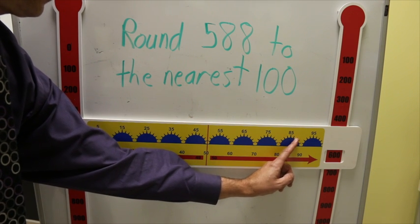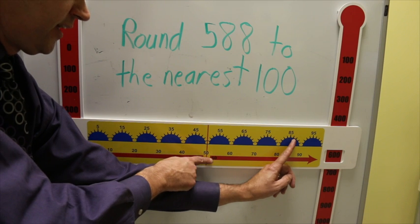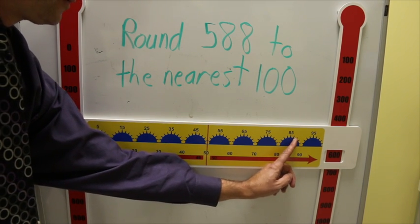588. Again, my fingers closer to the window on the right. It's on this side of the line and 88 is greater than 50. So your final answer is 600.